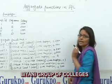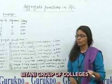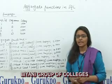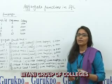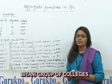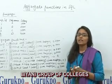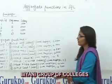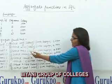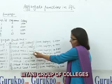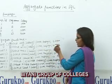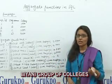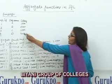The third one is MAX. The MAX aggregate function returns the largest value of a column. The query will be SELECT MAX(column_name) FROM table_name, and it will return the largest value of the column, which is 4000.